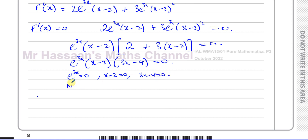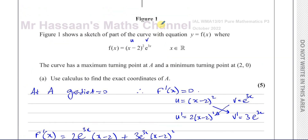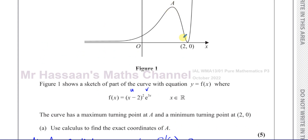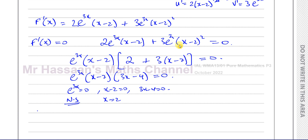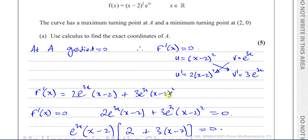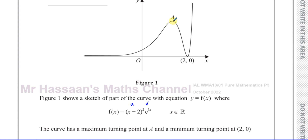We can say either e^(3x) = 0 — which has no solution — or x-2 = 0, giving x = 2, or 3x-4 = 0, giving x = 4/3. x = 2 is the minimum turning point (2, 0) already given to us. So x = 4/3 must be the x-coordinate of point A.